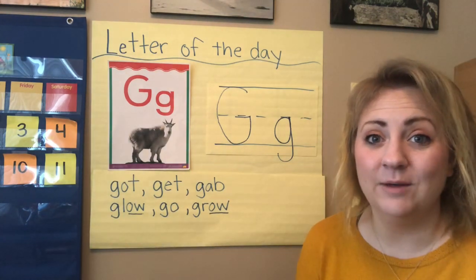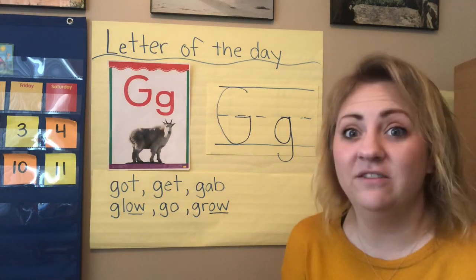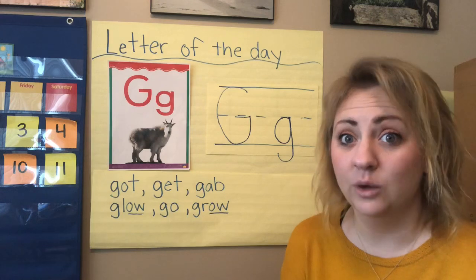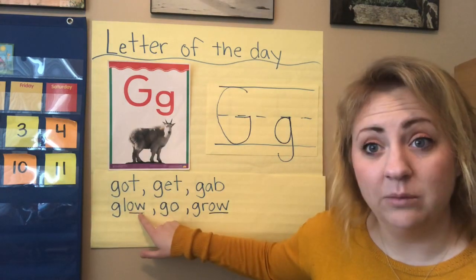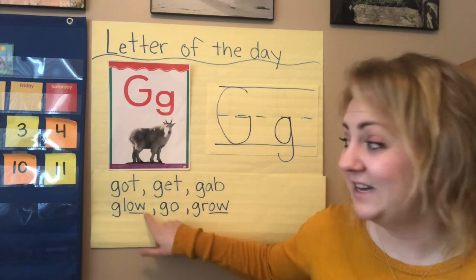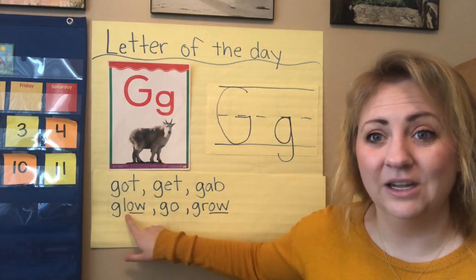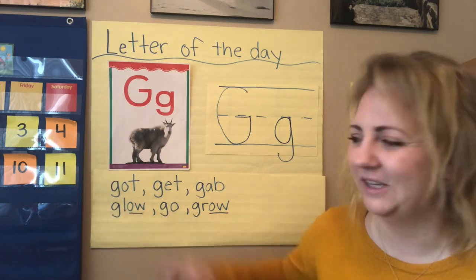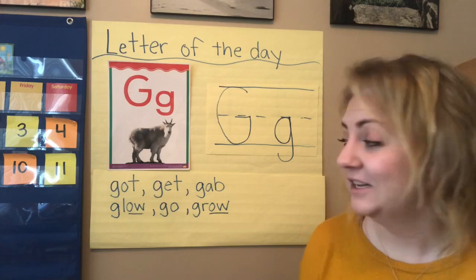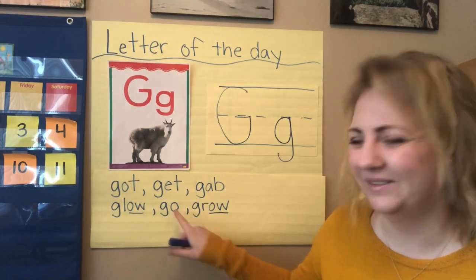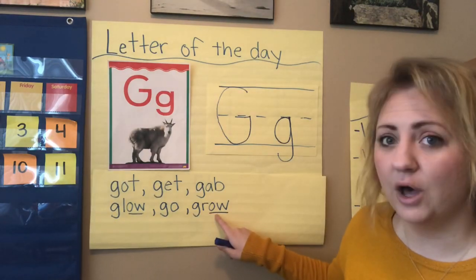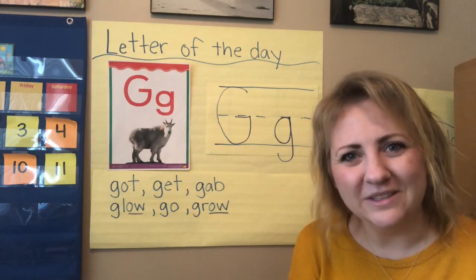Now we're going to look at some G words that have the O sound in them — our long O sound. When we see an O and a W together, it makes the O say its name. Let's go ahead and sound it out. G-L-O — glow. Good. G-O — this is one of our sight words that we practiced in class — go. G-R-O — grow. Awesome job, boys and girls.